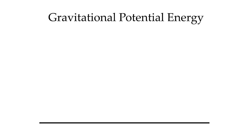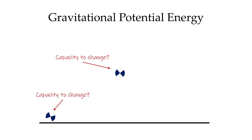Let's start with gravitational potential energy, which is the energy associated with position. Let's take an object laying on the ground — it's not changing, and we can say it has no capacity to change. Unless a force was acting on it, the object would just sit on the ground indefinitely. Now, if we raise an object off the ground, it's going to have a certain capacity to change. All we have to do is release it, and the object will move, changing its position and moving back down towards the surface of Earth.